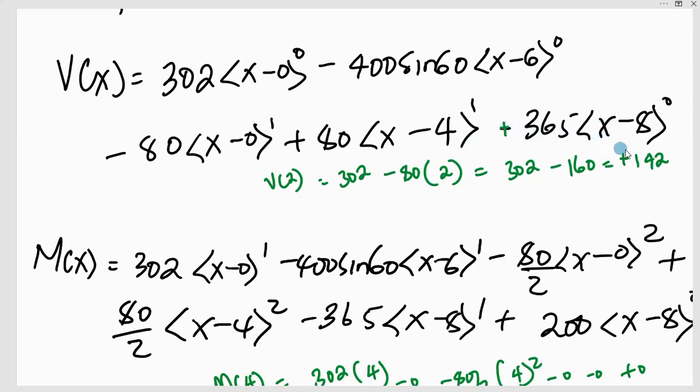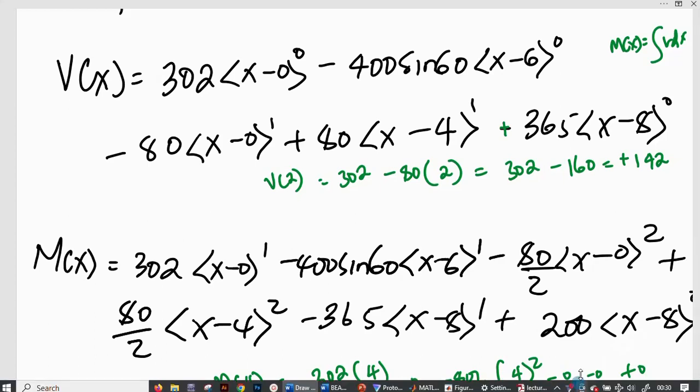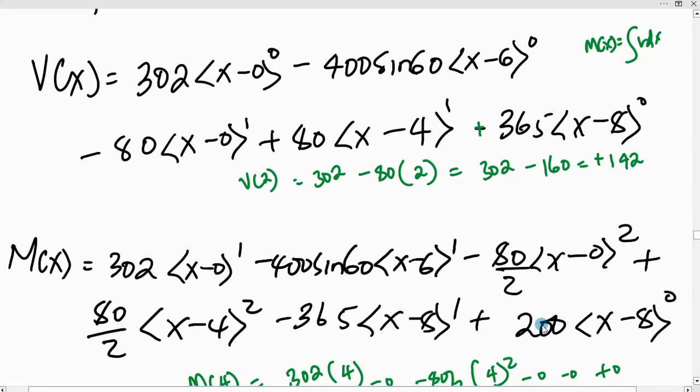The bending moment equation is a matter of integrating the shear force, because we know that M(x) equals the integral of V(x) dx. I get 302 angle bracket x minus 0 to power 1 minus 400 sine 60 angle bracket x minus 6 to power 1 minus 80 over 2 angle bracket x minus 0 squared plus 80 over 2 angle bracket x minus 4 squared minus 365 angle bracket x minus 8 to power 1 plus 200.